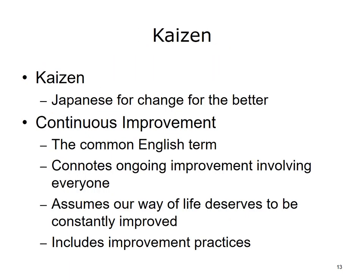Kaizen is a Japanese term for change for the better, and the common English term is continuous improvement. The term connotes ongoing improvement involving everyone and assumes our way of life deserves to be constantly improved. It also includes improvement practices such as customer orientation, automation, and quality improvement.